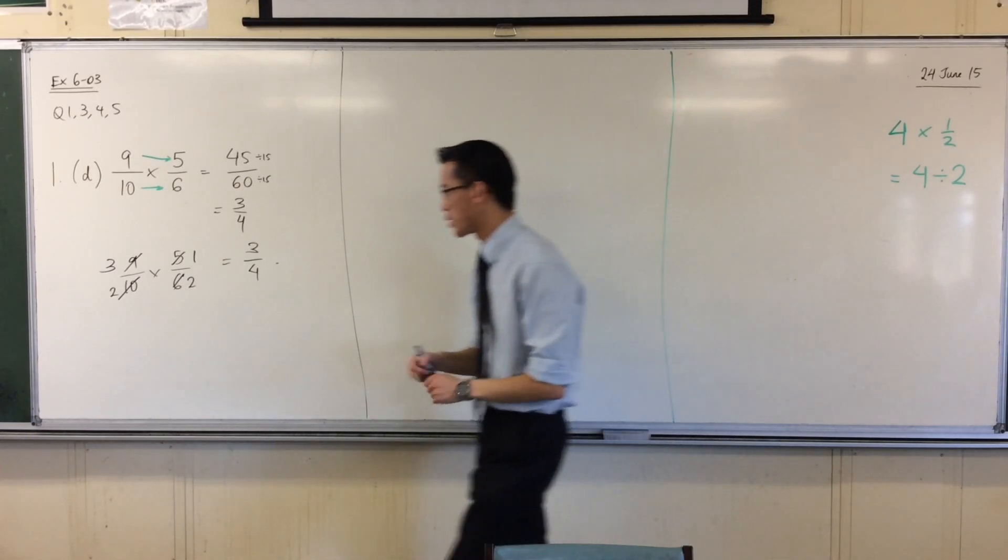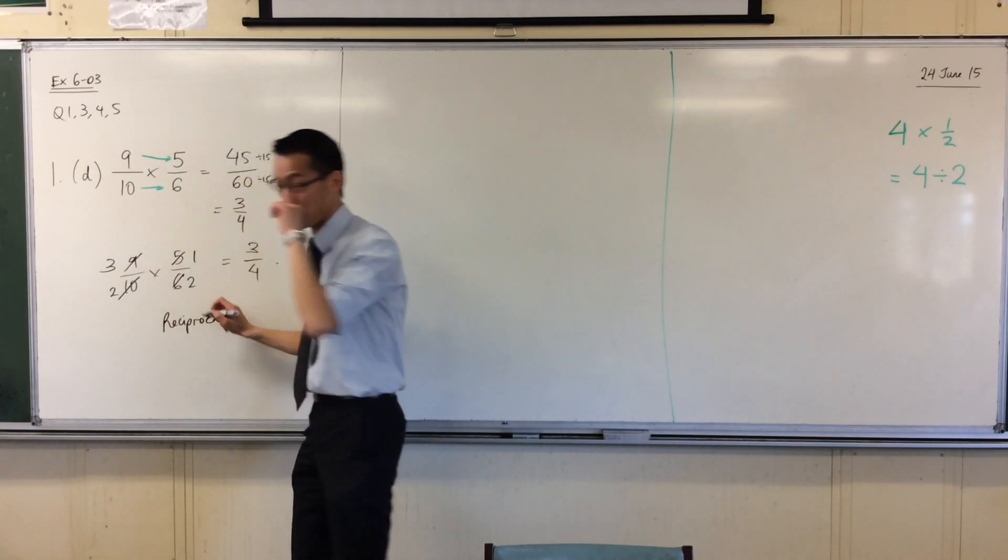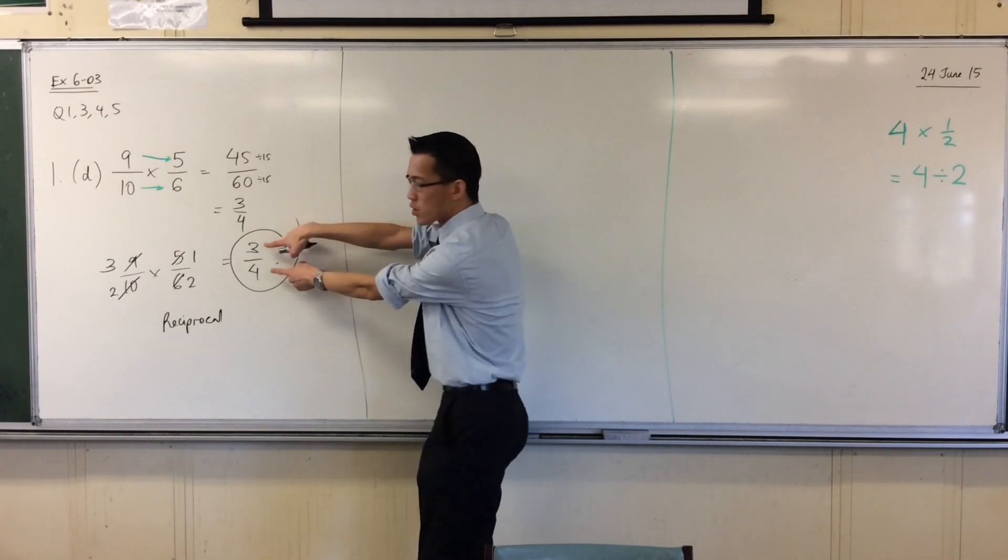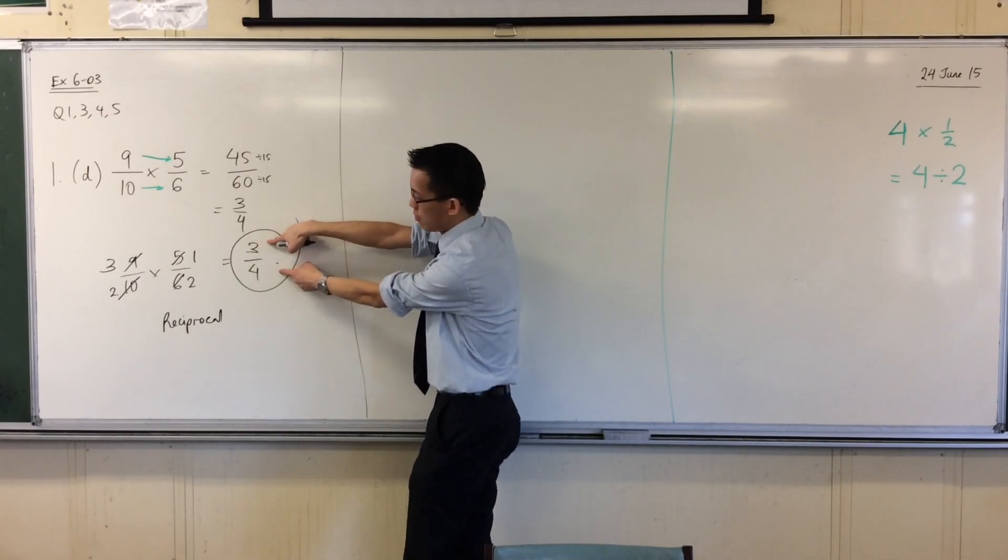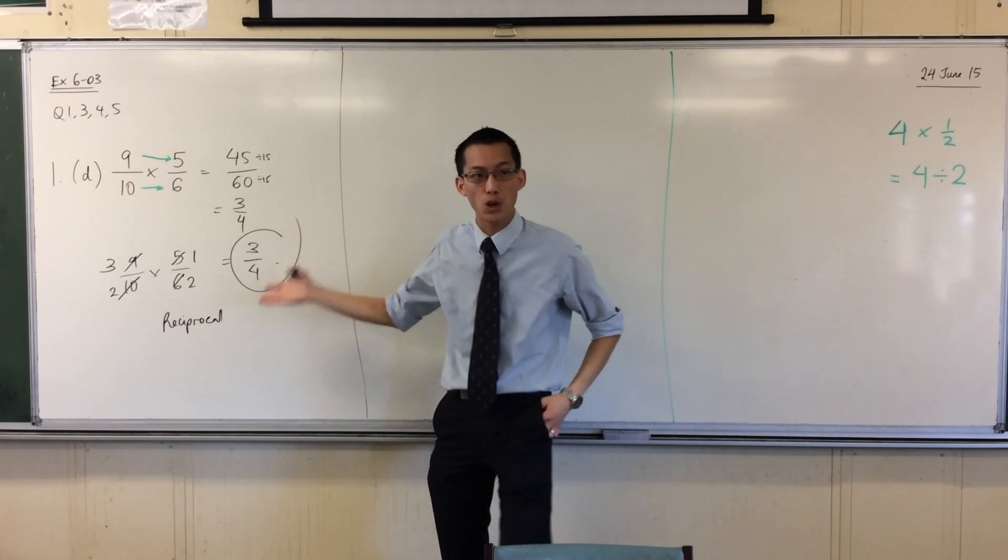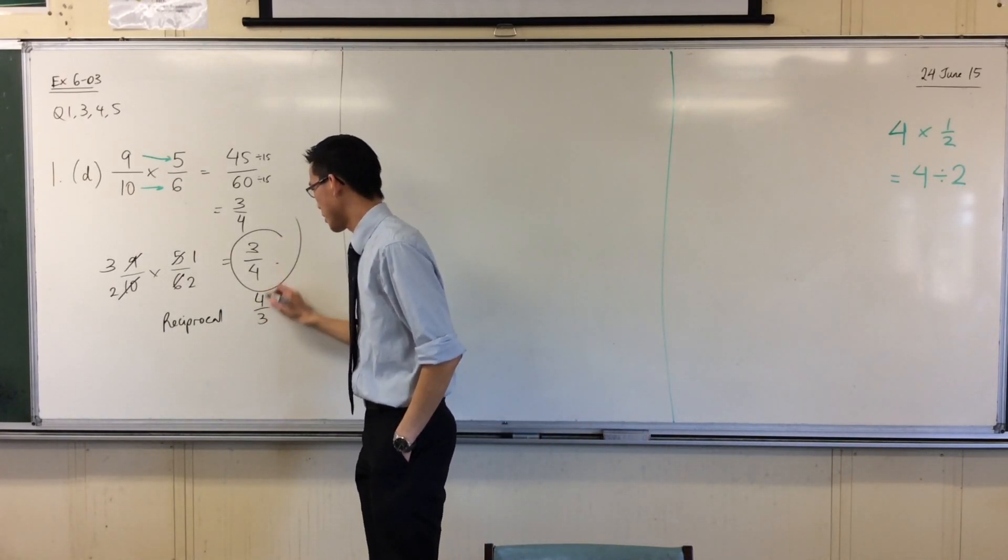All right, one last quick note. A reciprocal, just in case you don't remember, it's fine, it's a funny word, doesn't get used very often. A reciprocal is where you take a number and you switch the numerator and the denominator. You switch the top and the bottom. So for example, the reciprocal of 3 quarters would be 4 over 3, 4 thirds.